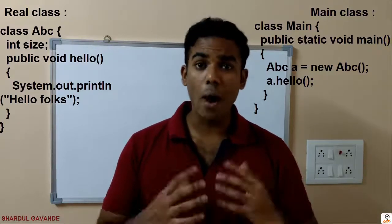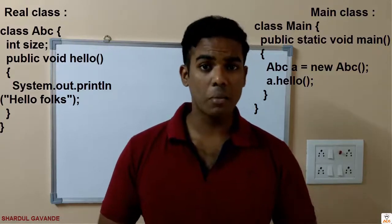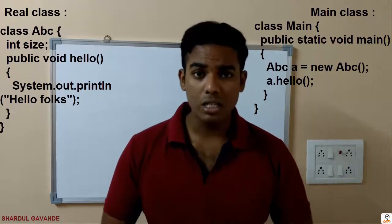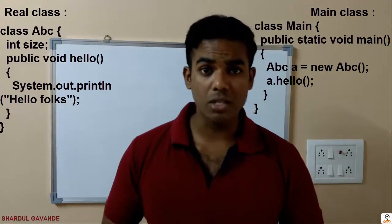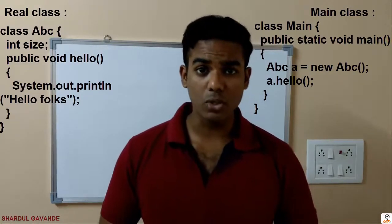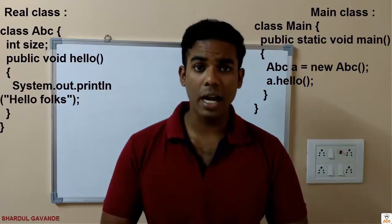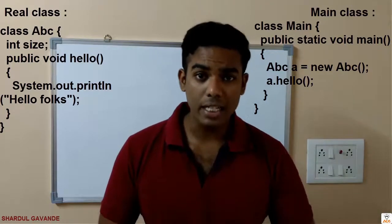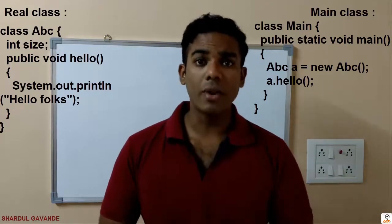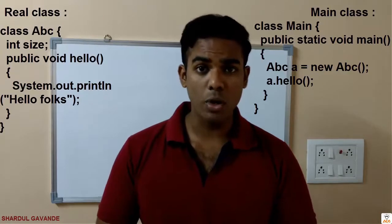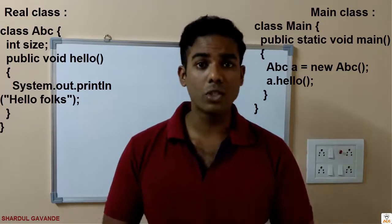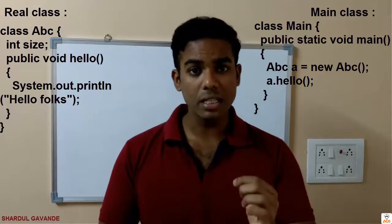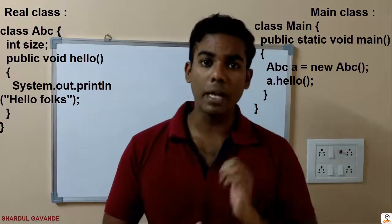Why this method is named public static void — all this we will understand later in further subsequent videos. As of now, we will only understand that the main class is the only class which gets called whenever your Java code has been run. JVM always looks for your main class and under that, the main method.